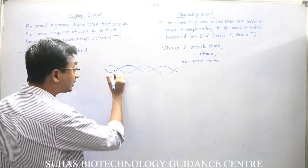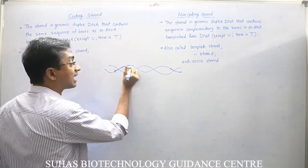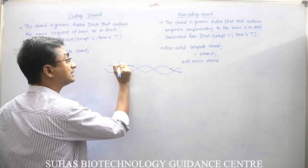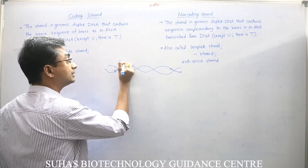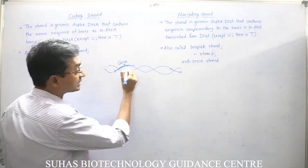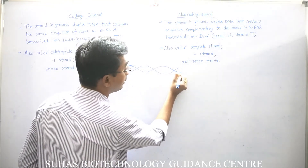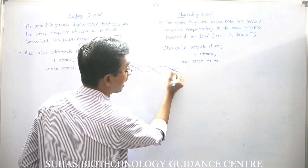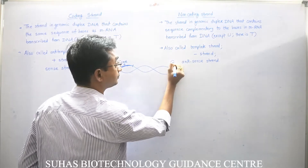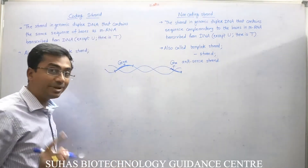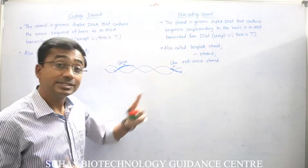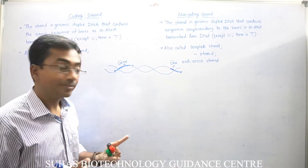This part which I am darkening here and calling it as a gene, and again this part I am darkening because this is another gene — so that means all genes are present on the same strand.